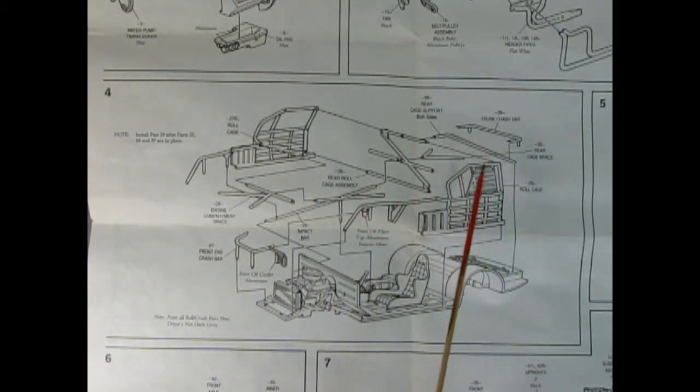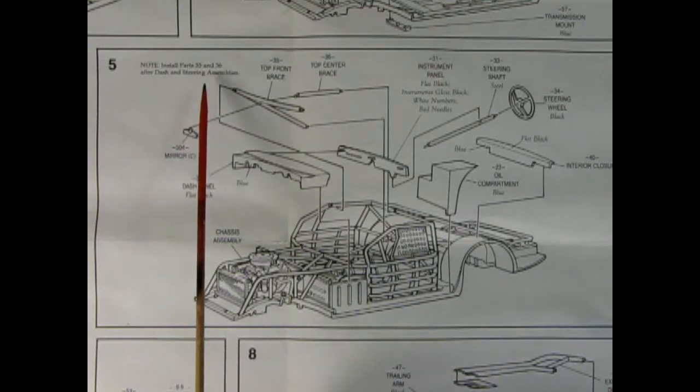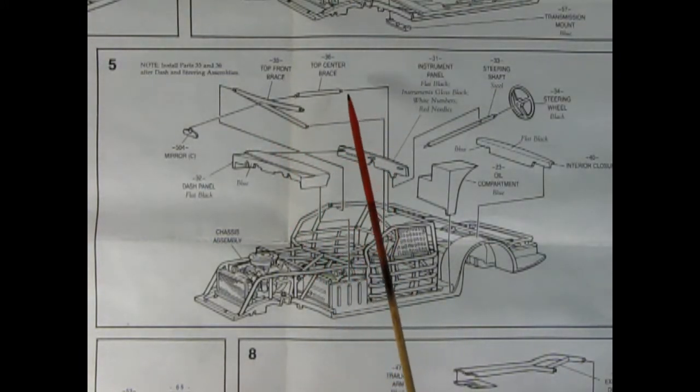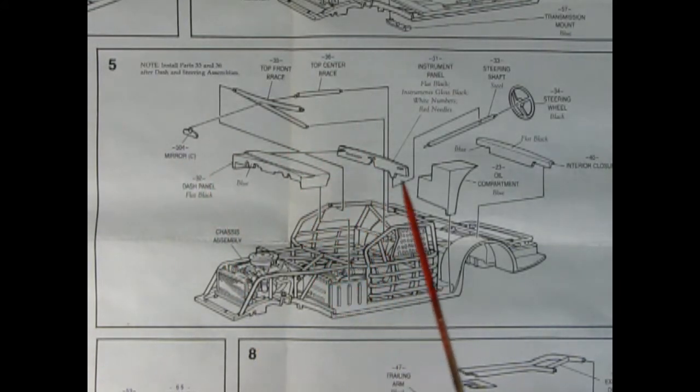You even get a trunk crash bar. They've all been named in here too. So all that will drop in and there's even a front end crash bar which goes right here just in front of the radiator. So in panel 5 we've got this note that says to install parts 34 and 36 after dash and steering assemblies. Oh I can see why because that goes up on the top here. There's a top center brace and a top front brace. We've got this chrome mirror sitting here, our dashboard panel, the dashboard and instrument panel itself, and then we've got our steering shaft and steering wheel. Our interior closure and this oil compartment. Again all the paint colors are being pointed to right on the parts here. This is gonna look really cool once it gets all together.